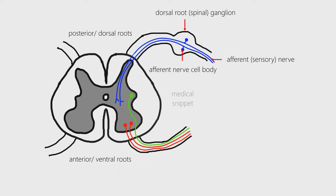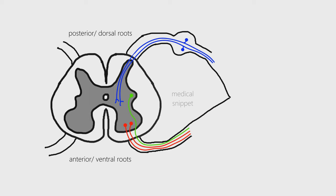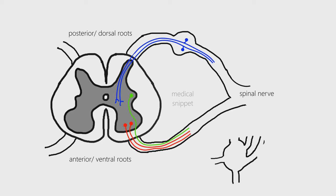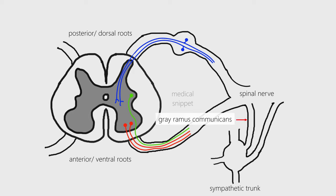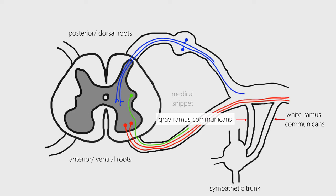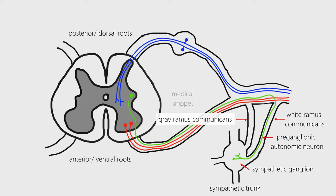These spinal ganglia are intercalated into the dorsal roots. It should be noted that the dorsal roots of the first cervical nerve do not have a spinal ganglion. The dorsal and ventral roots unite to form the spinal nerves. The spinal nerves also communicate with the sympathetic trunk through the rami communicantes, which consists of grey rami communicantes and white rami communicantes. The white rami communicantes carry preganglionic nerve fibers from the spinal cord to the paravertebral ganglion of the sympathetic chain. The postganglionic fibers from these sympathetic ganglia enter the spinal nerves through the grey rami communicantes.